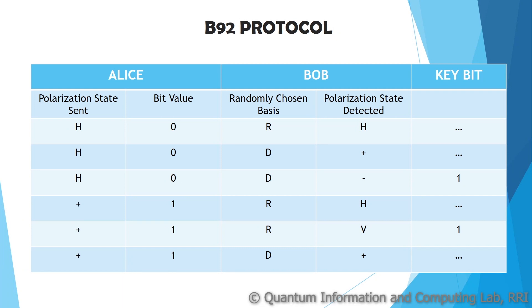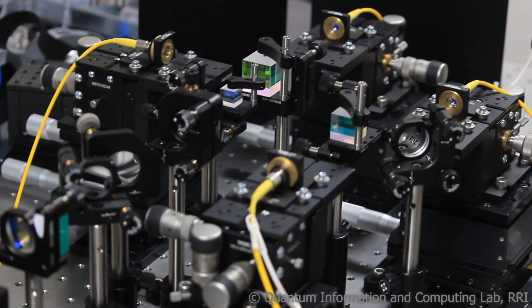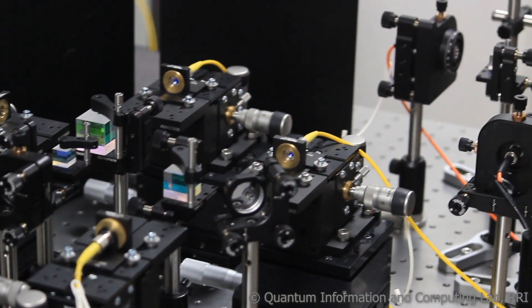Of all the 6 possible scenarios, a keybit can be generated only twice. As mentioned earlier, sifting is not required in the B92 protocol — that is, Alice and Bob do not publicly announce the choice of bases for each instance of the protocol.